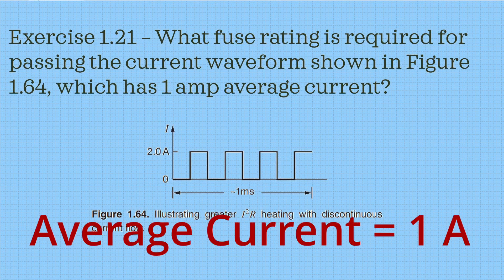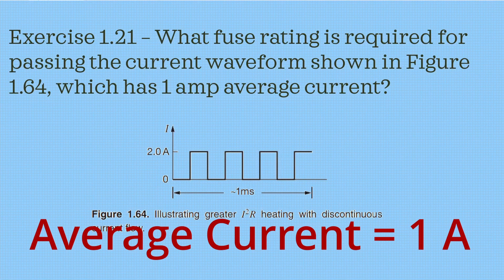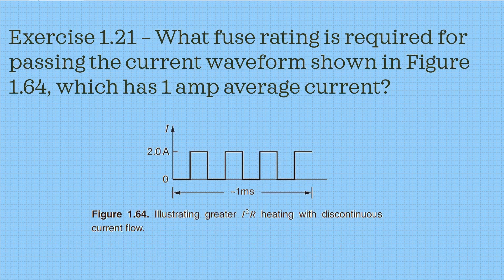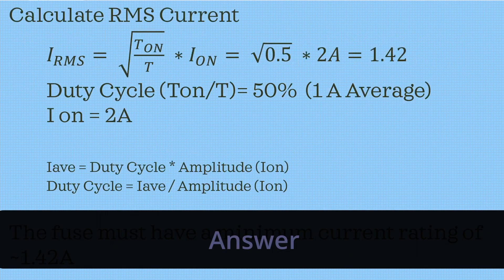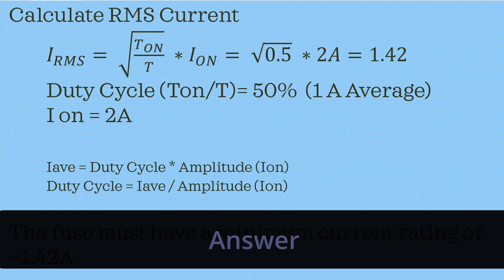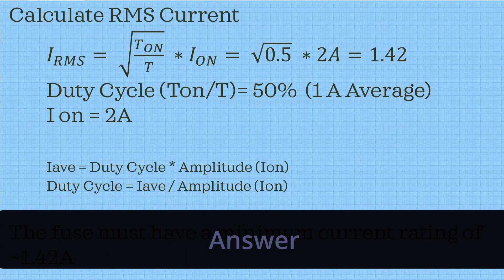The average current of the waveform is given as 1A. So firstly, in order to calculate the fuse rating, we must calculate the RMS current from the average current that is given to us.